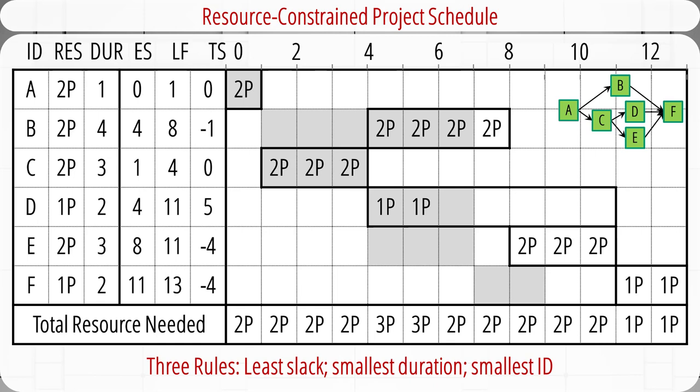This is the final resource-constrained project schedule with all activities loaded. The total number of programmers is always less than or equal to 3. The project end time is pushed from week 9 to week 13. In this example, we only used least slack to schedule parallel activities when there was a shortage, and didn't need the other two rules — smallest duration and smallest ID — but you may need them in real-world applications.